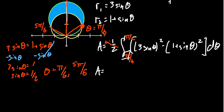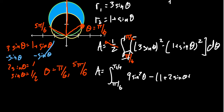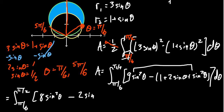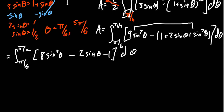Simplifying, the area equals the integral from pi over 6 to pi over 2 — the one-half canceled with the 2 from doubling. Squaring 3 sine theta gives 9 sine squared theta. FOILing (1 plus sine theta) squared gives 1 plus 2 sine theta plus sine squared theta. The sine squared term combines with the 9 sine squared, and after gathering like terms, we end up with 8 sine squared theta minus 2 sine theta minus 1 inside the integral.